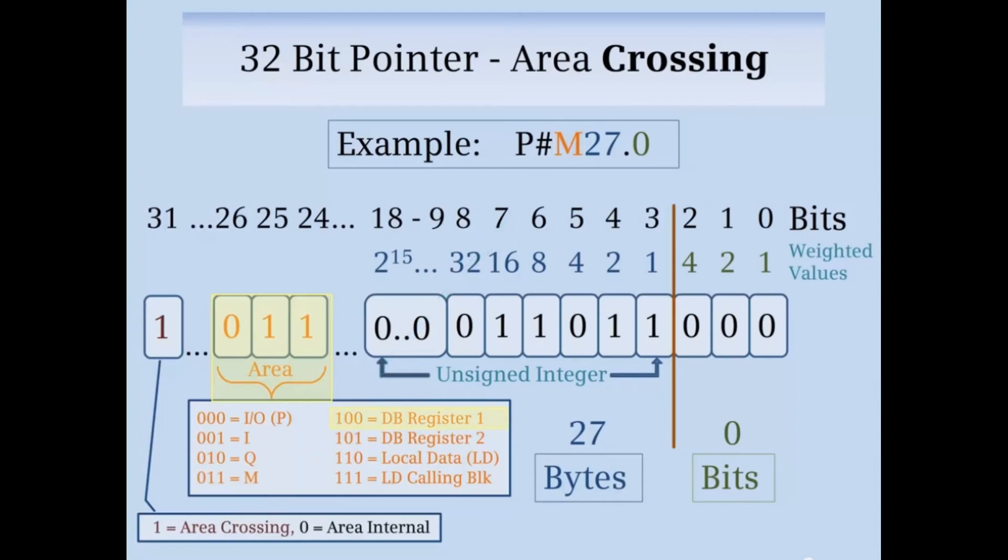001 is the data block area in DB register 1, which is a global DB. 001 is the data block area in DB register 2, which typically is a data instance block but can be a global DB if the programmer has intentionally loaded a global DB in DB register 2. 110 is local data in the interface area of a block. 111 is the local data area of a calling block.